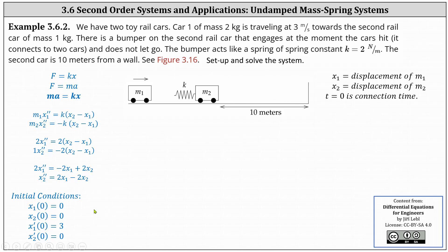We also have several initial conditions. Both carts start with a displacement of zero, giving us x1 of zero equals zero and x2 of zero equals zero. The first car is traveling at three meters per second, giving us x1 prime of zero equals three, and the second cart starts at rest, given by x2 prime of zero equals zero.